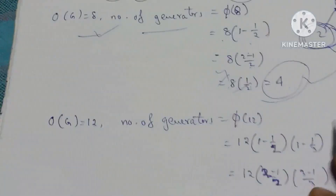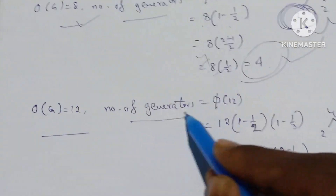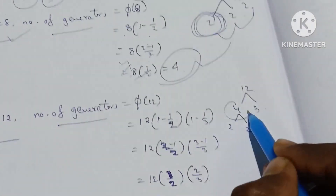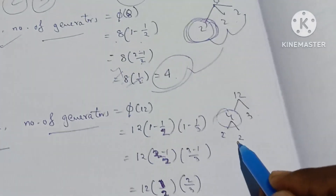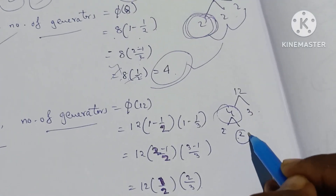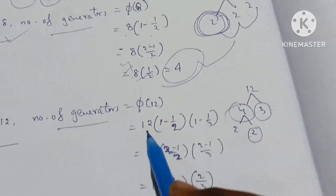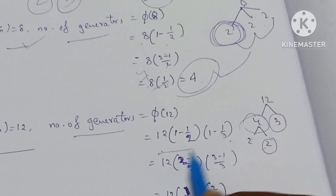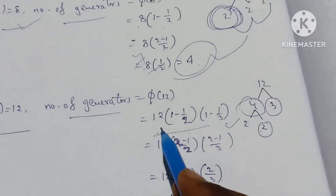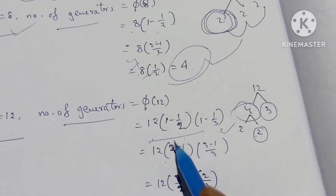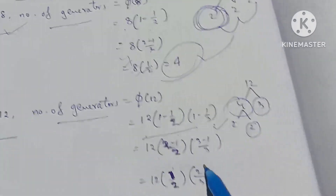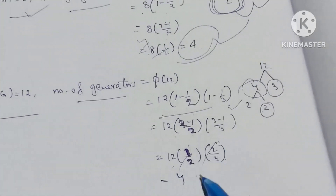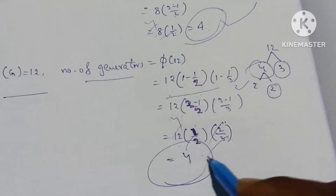Next, order 12. The order of G is equal to 12. Number of generators is equal to φ(12). 12 = 4 into 3; 4 is not prime, so 4 = 2 into 2. The only distinct prime factors are 2 and 3. So φ(12) = 12 into 1 minus 1 by 2 into 1 minus 1 by 3. That is 12 into 1 by 2 into 2 by 3. The 2s cancel, leaving 3 times 4 divided by 3, equal to 4.